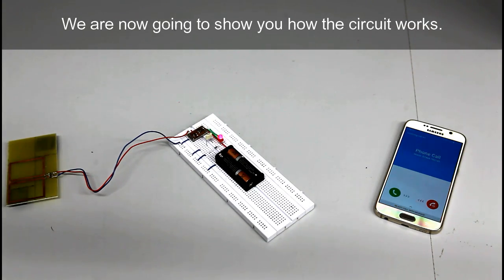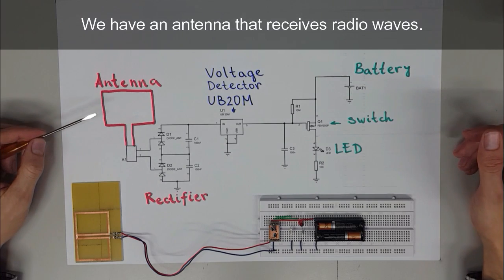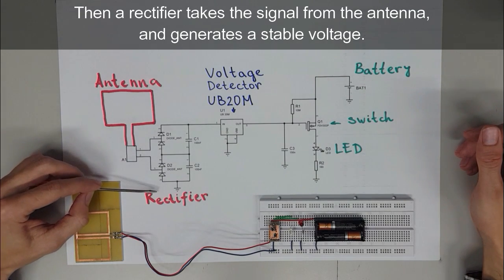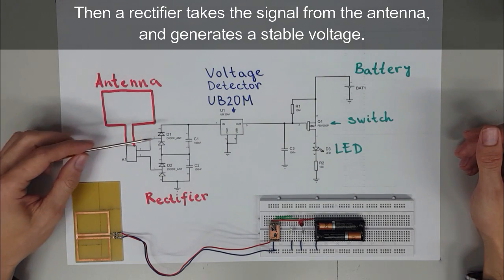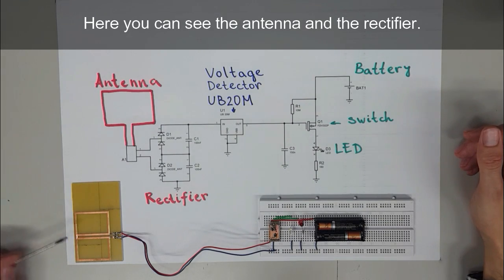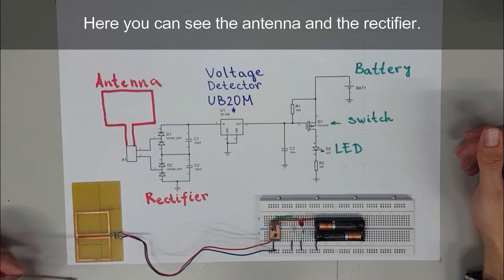We're now going to show you how the circuit works. We have an antenna that receives radio waves. Then a rectifier takes the signal from the antenna and generates stable voltage. Here you can see the antenna and the rectifier.